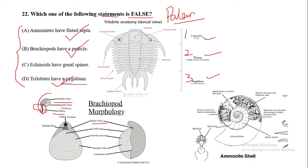Looking at the trilobite image, you can see the compound eye, glabella, facial suture, and segments. You can also clearly see the genal spine in the trilobite anatomy. So the genal spine is actually present in trilobites, not in echinoids.